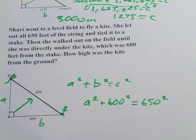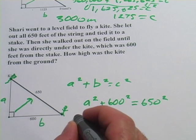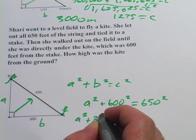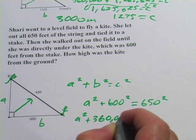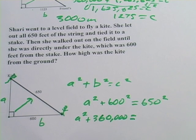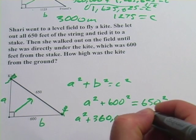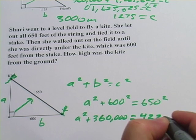And now we can start doing our math here. First of all, let's square 600, and that's 360,000. And let's square 650, and that is 422,500.